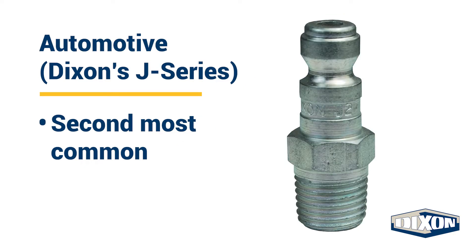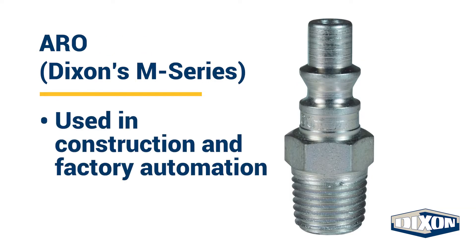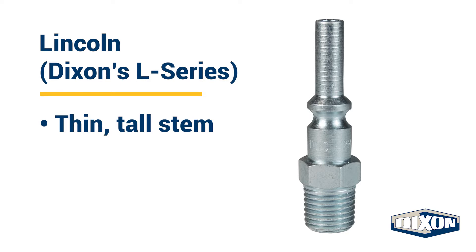Automotive couplings are typically the second most common. ARO couplings are used on pneumatic lines in construction and factory automation. Lincoln-style quick disconnect couplings have a thin, smokestack-style stem similar to the 16th President's trademark hat.